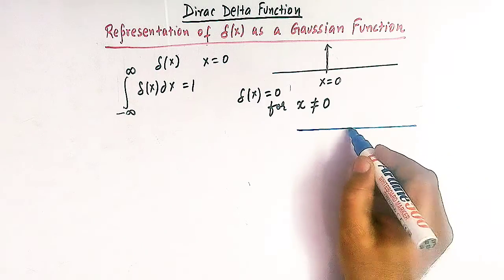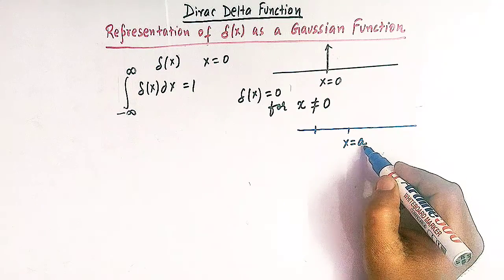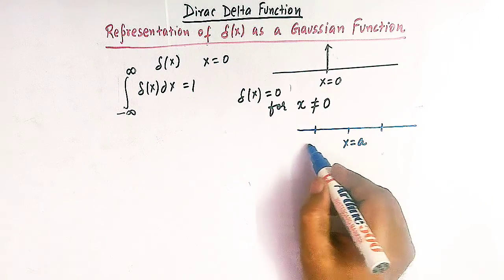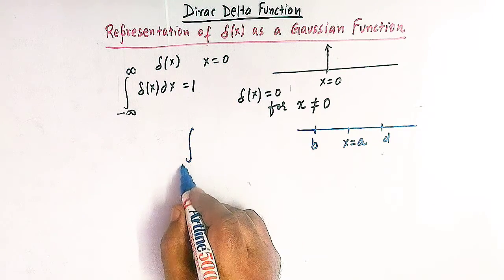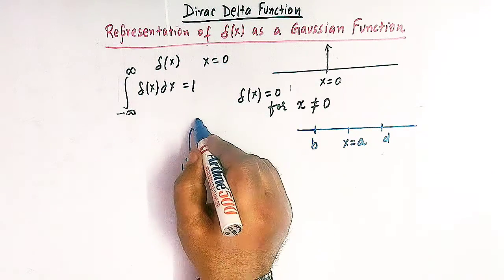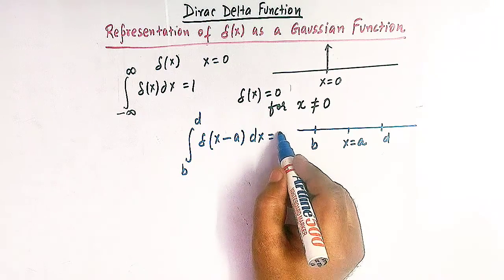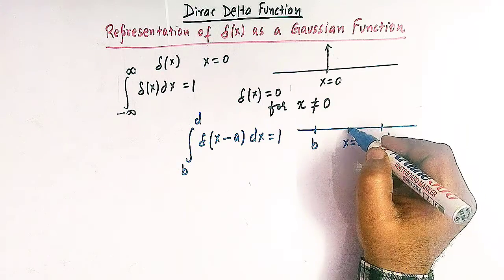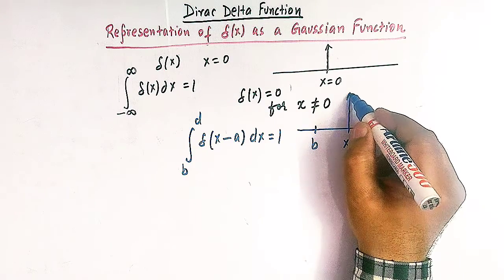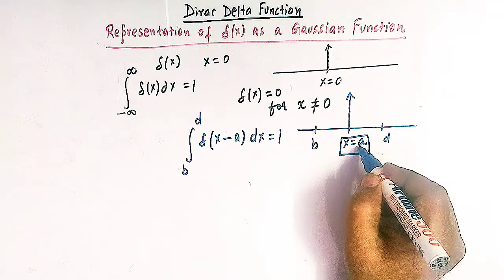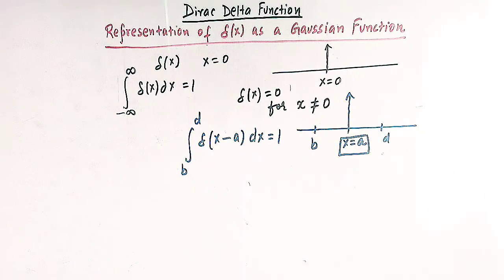If we have a point x equal to a, and this point falls within a domain from b to d, then we can define the delta function as the integral from b to d of delta(x minus a) dx, and this is equal to 1. This means the peak exists only at x equal to a, and the delta function is 0 at all other points except x equal to a.